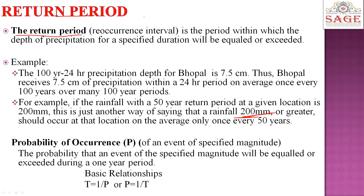Next is probability of occurrence. The probability that the event of the specified magnitude will be equaled or exceeded during a one-year period. The amount of occurrence that will occur at a particular magnitude in time. For example, the probability of getting heads in a coin flip: the event (heads) is 1, and the sample space (heads and tail) is 2, so the probability is 1 by 2.